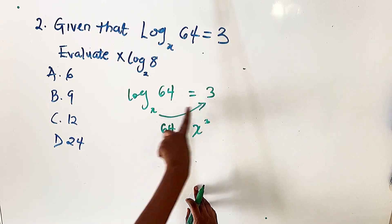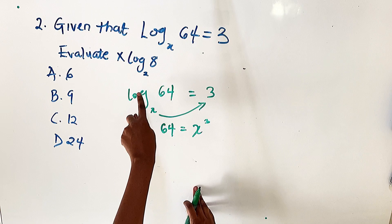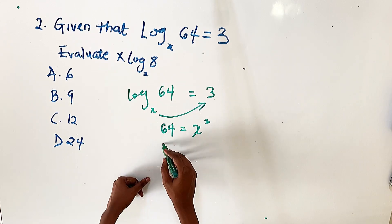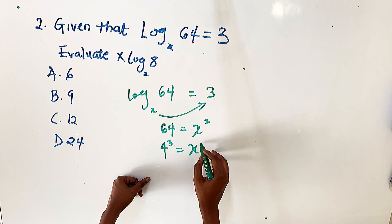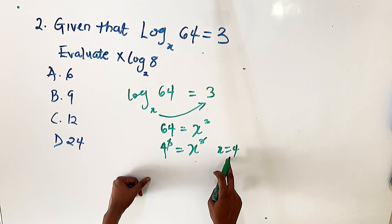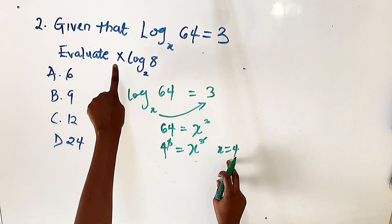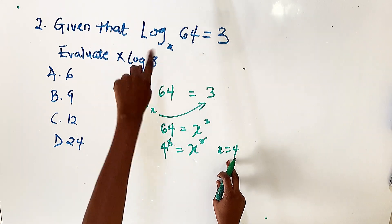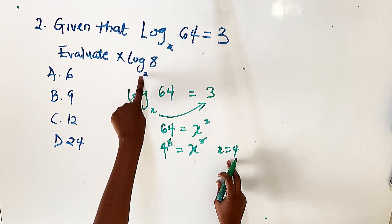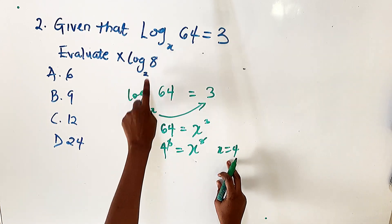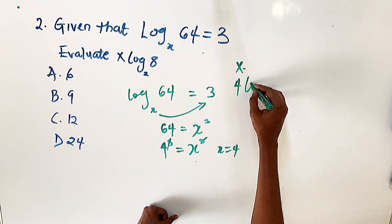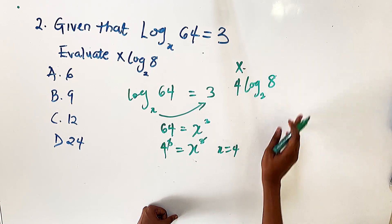Whenever the base raises the value it eliminates the log sign. Now, 64 is the same as 4³, so if x³ = 4³, then x = 4. Now that we have x = 4, we substitute into x · log 8 base 2, giving us 4 · log 8 base 2.